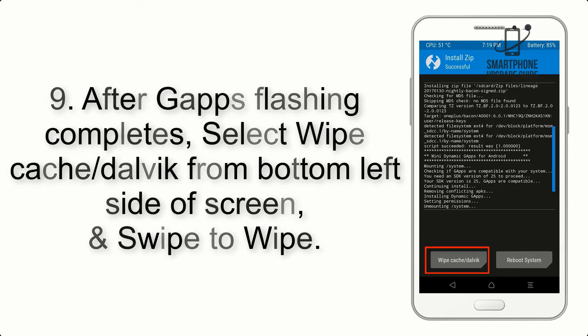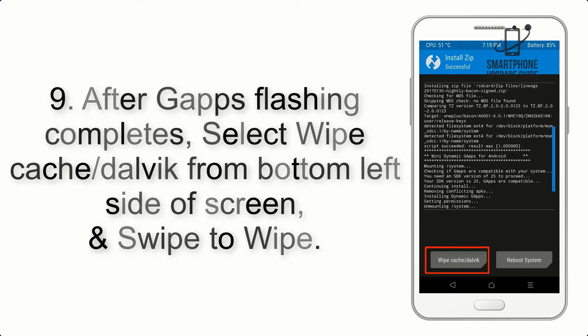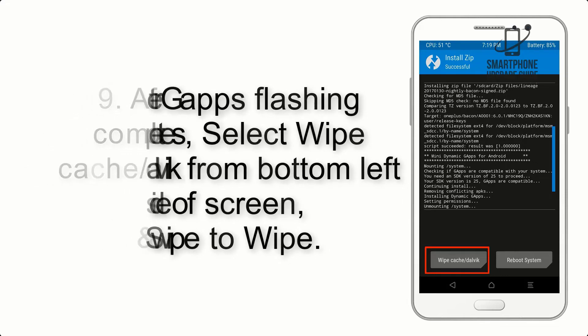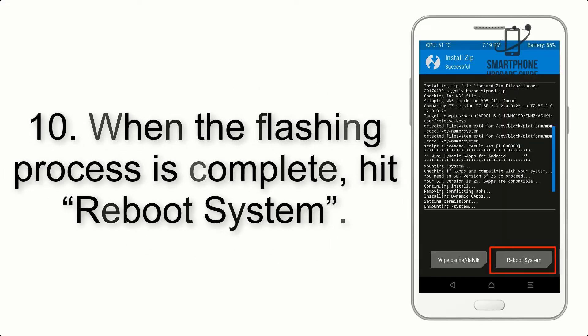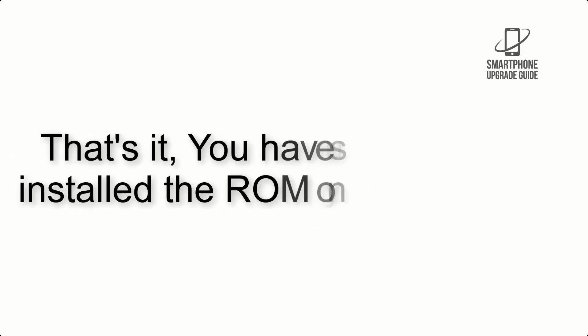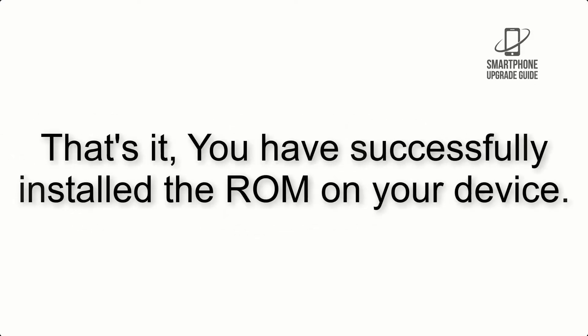Step 8: Flash the GApps zip package in the same manner. Step 9: After GApps flashing completes, select Wipe Cache and Dalvik from the bottom left side of the screen and swipe to wipe. Step 10: When the flashing process is complete, hit Reboot System. That's it — you have successfully installed the ROM on your device.